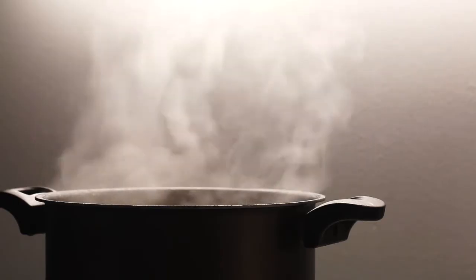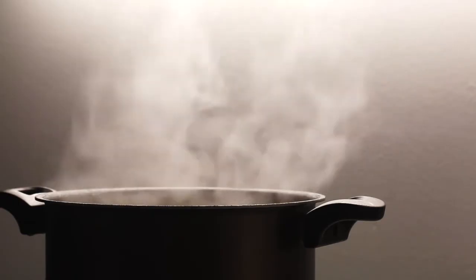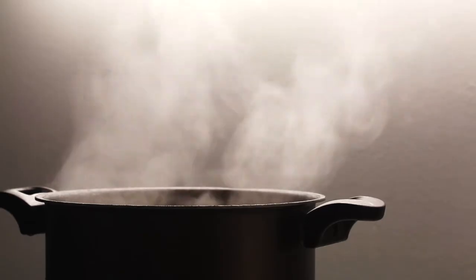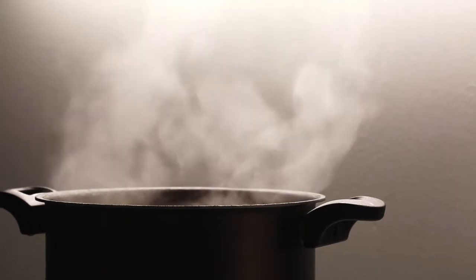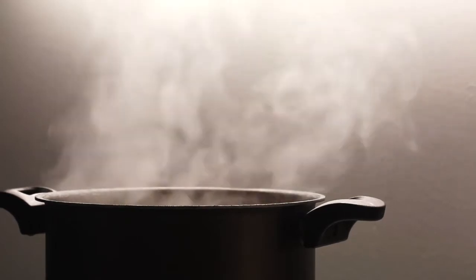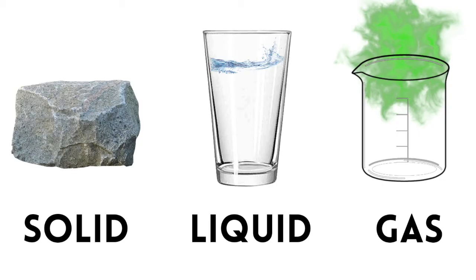Gases are fluids, so they can flow. Their shapes adapt to that of their containers. The atoms or molecules in a gas are spread much more thinly than the particles in solids and liquids. Characteristics of a solid are that it retains a fixed volume and shape, is not easily compressible, and does not flow easily.